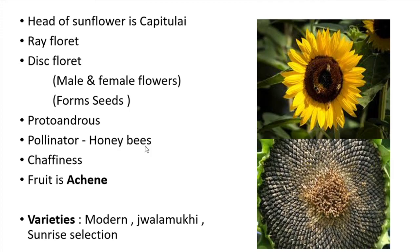Shattering resistance refers to the non-shattering of sunflower seeds. The fruit of sunflower is an achene. The head of sunflower is called capitulum. The important varieties of sunflower are Modern, Jwalamukhi, and Sunrise Selection. Modern is a rough and also short duration variety.